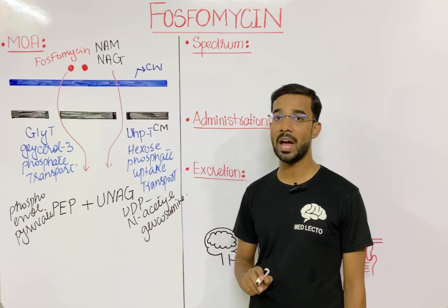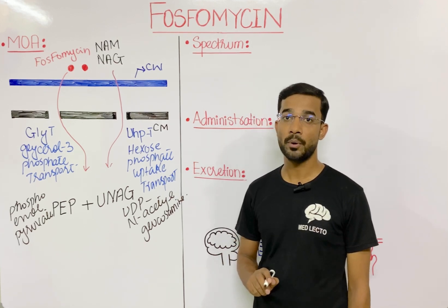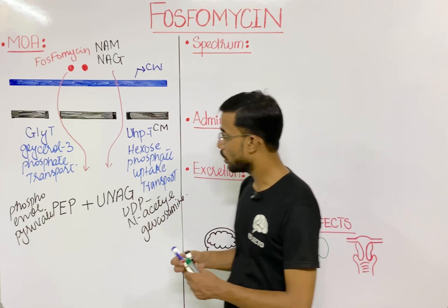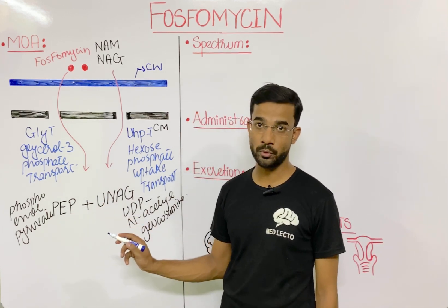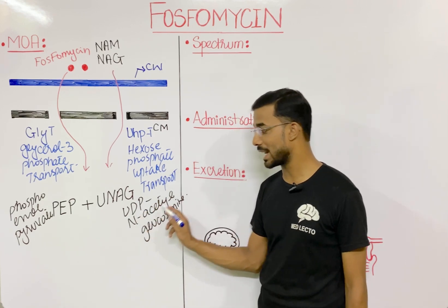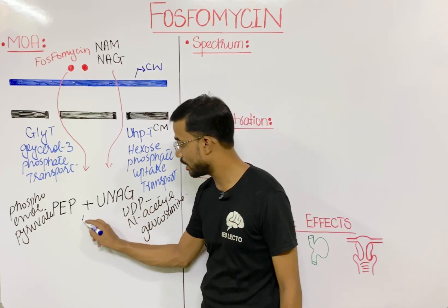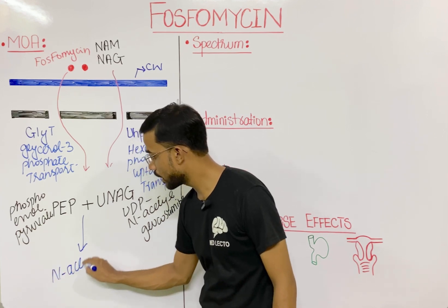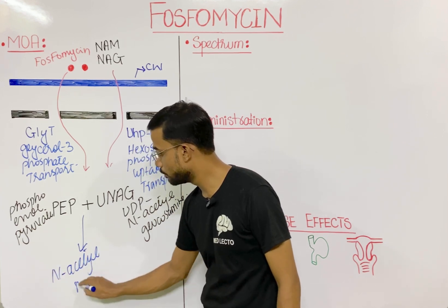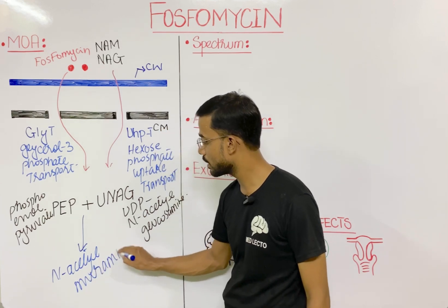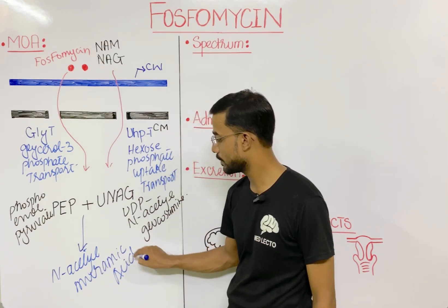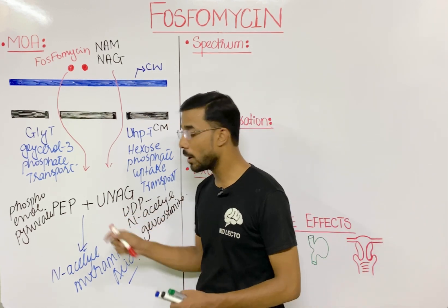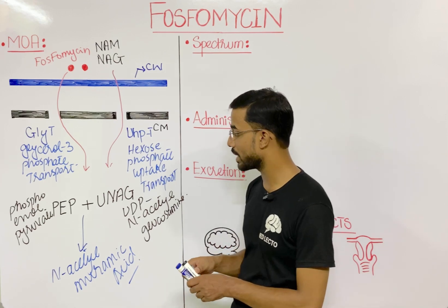N-acetyl muramic acid is produced from N-acetyl glucosamine. Phosphoenolpyruvate reacts with UDP-N-acetylglucosamine and results in the formation of N-acetyl muramic acid, which is an important component of the peptidoglycan. This whole process happens in the presence of a specific enzyme.